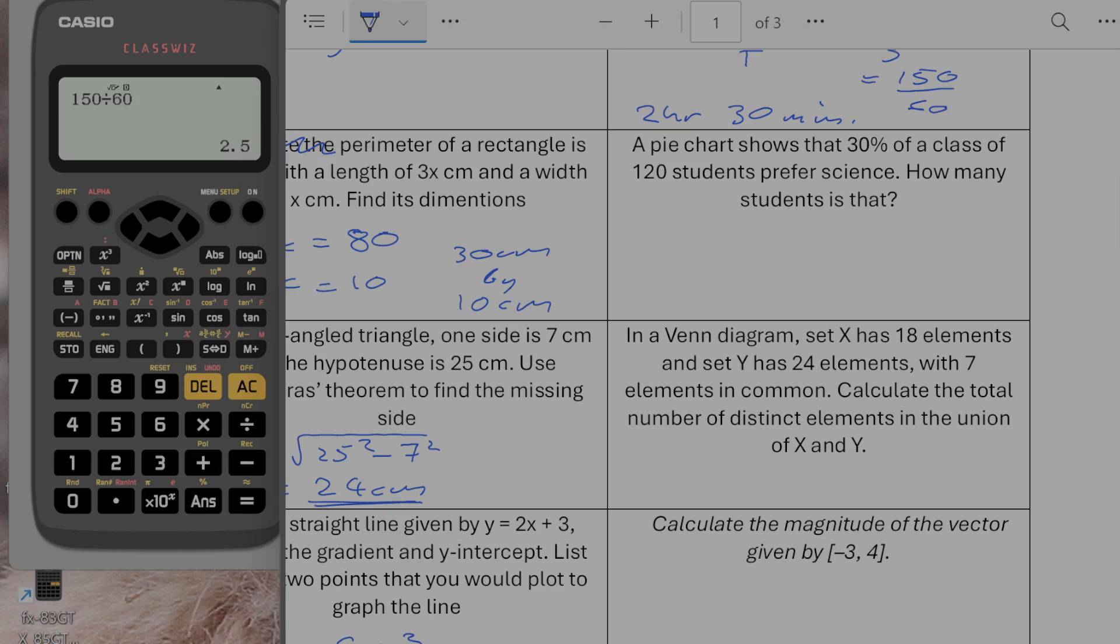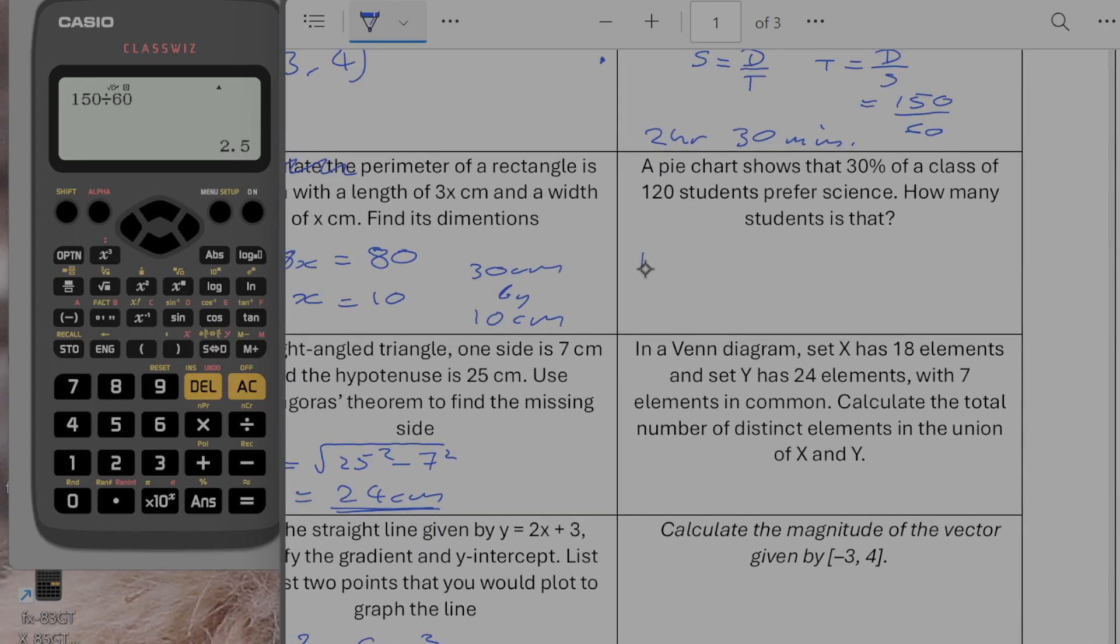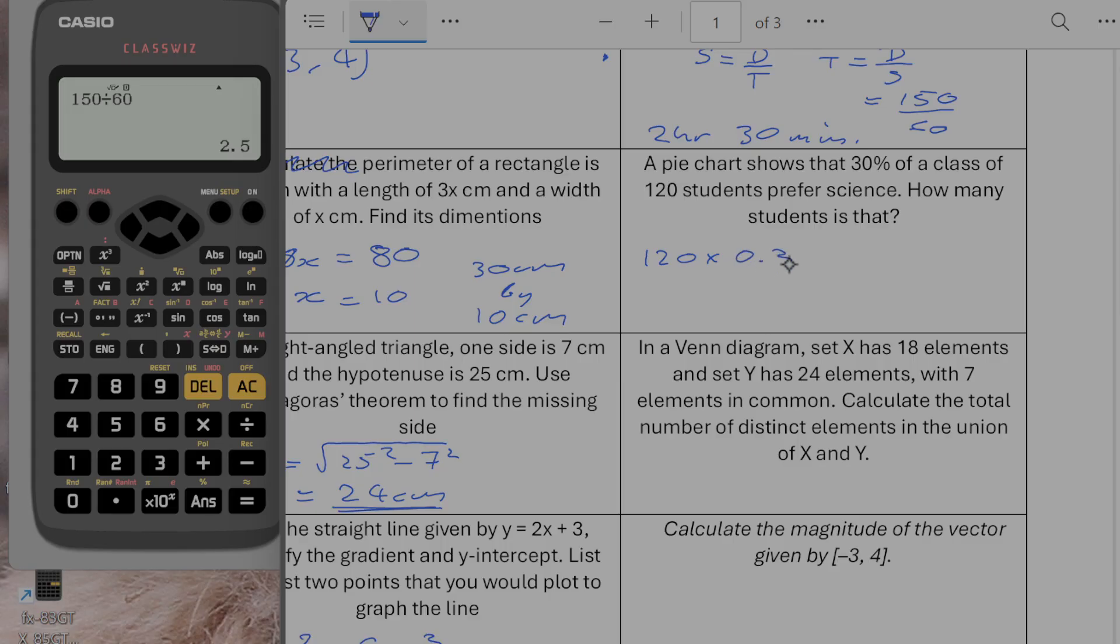A pie chart shows that 30 percent of a class of 120 students prefer science. How many students is that? So we want 30 percent of 120 so I'm going to do 120 times by 0.3. I think it's going to give us 36. Let's see 120 times 0.3 gives us 36.